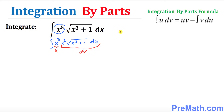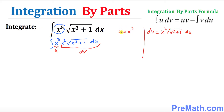What that means is: u equals x³, and our dv equals x² times √(x³ + 1) dx. So let's take care of this. What is the derivative of u? We want to find du. So du equals the derivative of x³, which is simply 3x² dx.